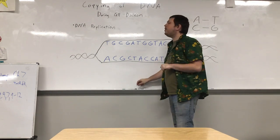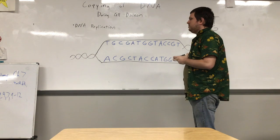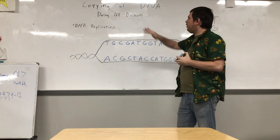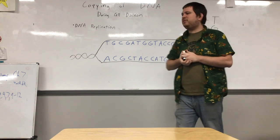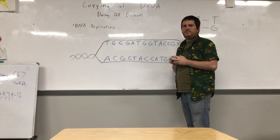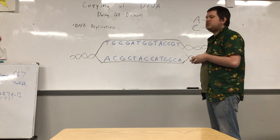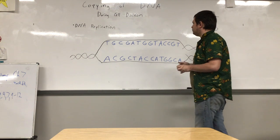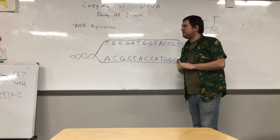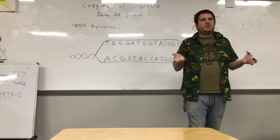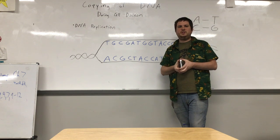Welcome back to part two of our DNA and RNA series. Today we are going to be doing copying of DNA, which happens during cell division before we enter mitosis. We have to copy the DNA so that each cell can have a copy of the instructions of how to run itself, which is what DNA is. It would be the same as if I gave you a car and told you to build it and didn't tell you how to put it together — you need those instructions.